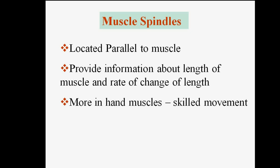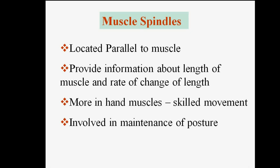When we see in detail, muscle spindles are located parallel to muscle. They provide information about the length of muscle and the rate of change of length. These are seen more in hand muscles, meaning they are more necessary for skilled movements. They are also involved in maintenance of posture.